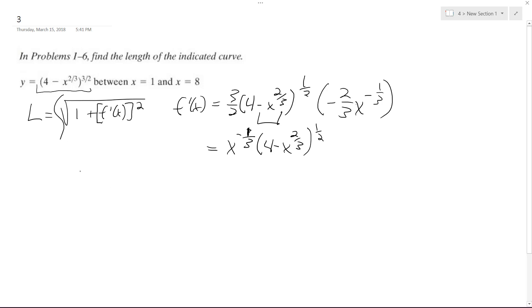So length is going to be equal to the integral of the square root of 1 plus quantity x raised to the negative 1 third, 4 minus x to the 2 thirds, raised to the 1 half, squared.